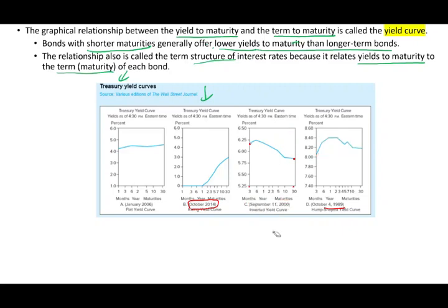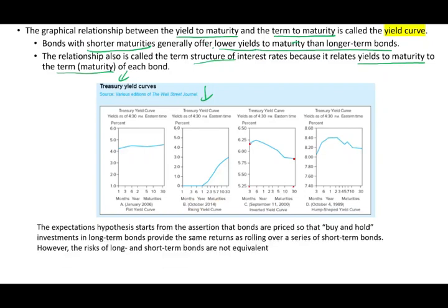One theory to explain the yield curve is called the expectations hypothesis, or expectations theory. It starts with the assertion that treasury bonds are priced so that buy-and-hold investments in long-term bonds provide the same return as rolling over a series of short-term bonds. If you buy a bond for five years, or roll over one-year bonds annually for five years, you should be earning the same rate.